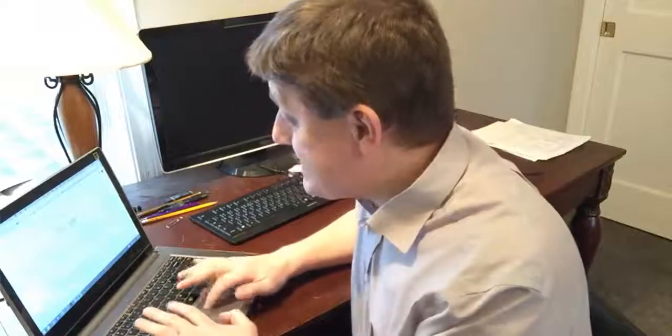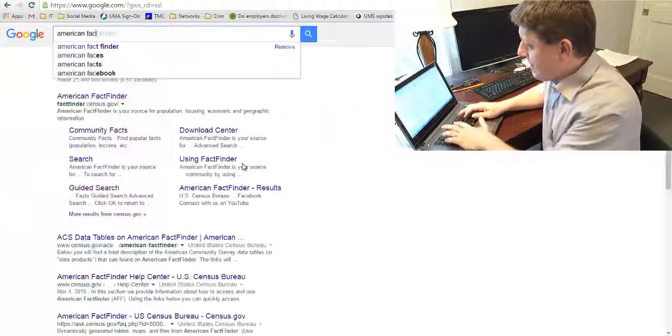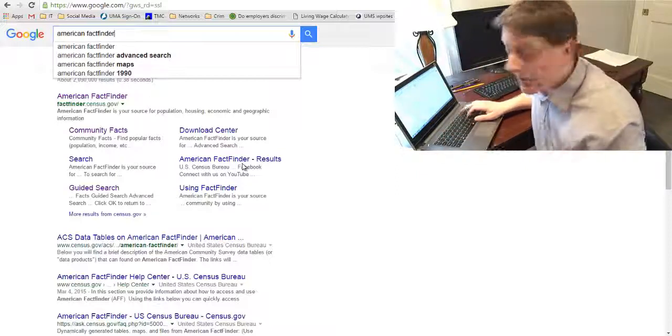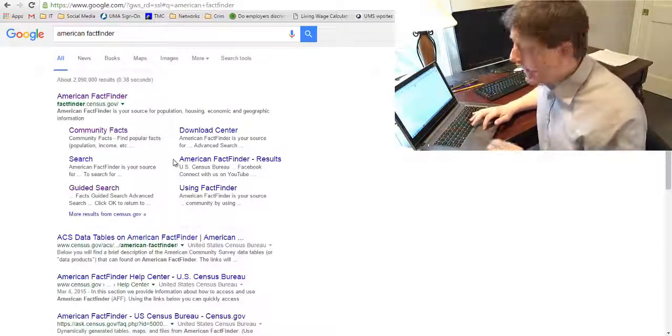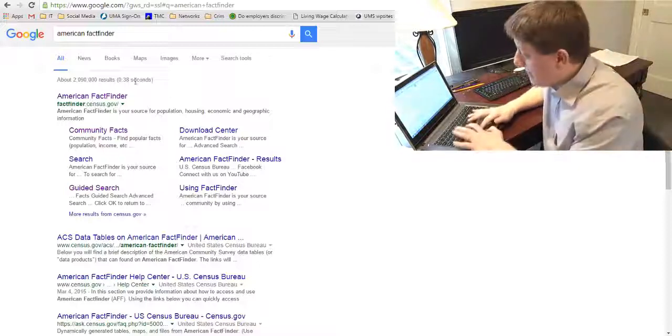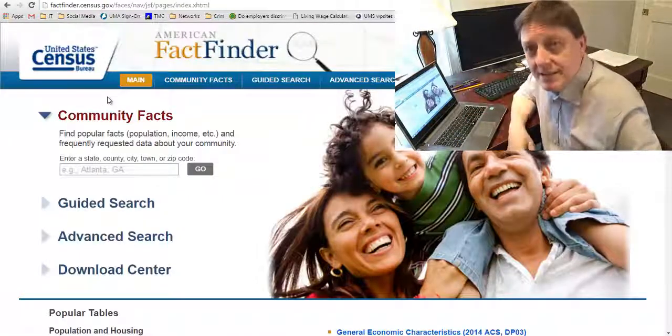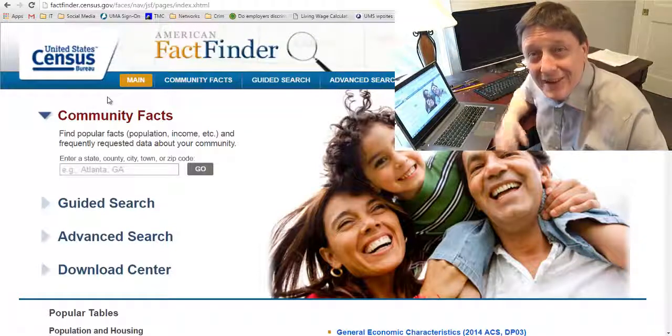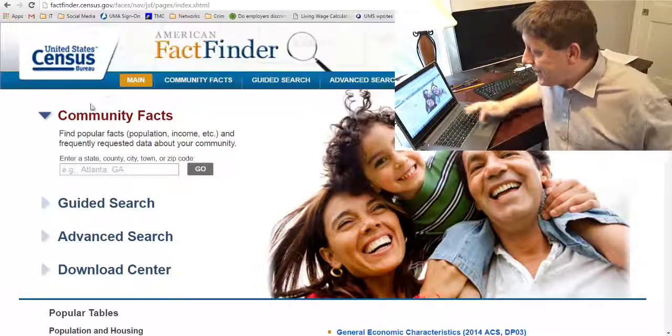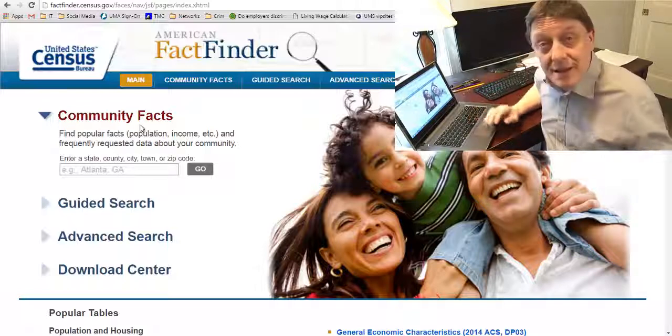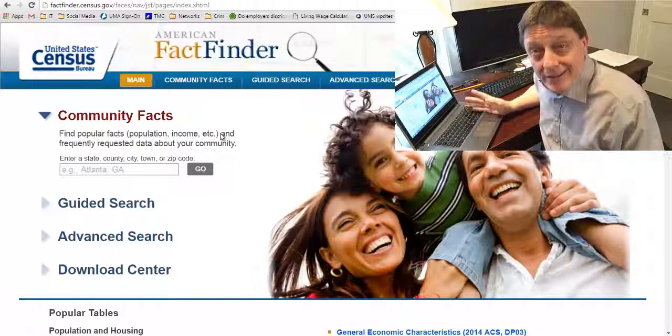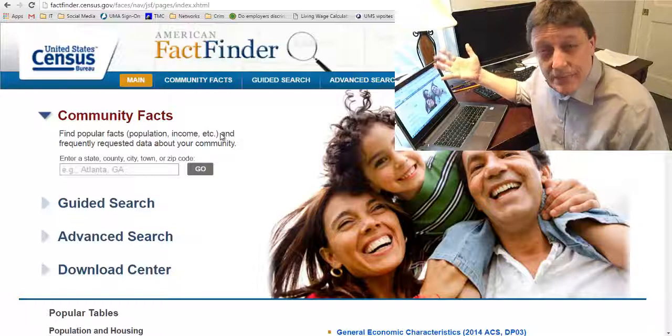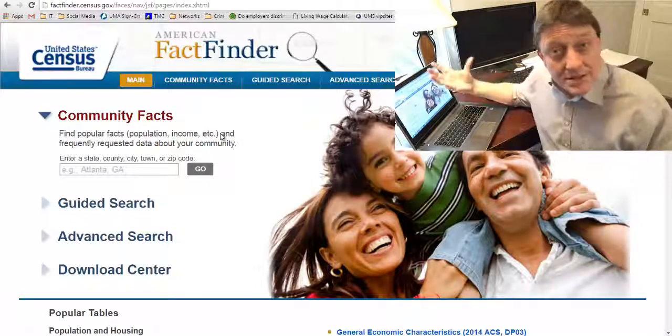To get started let's head to your favorite search engine and type in the words American FactFinder. You'll be taken to results and the first should be a website called factfinder.census.gov. Click on that and you'll be taken to a web page that shows smiling people and a link called Community Facts. It says find popular facts, population income, etc. and frequently requested data about your community. This is a website set up free and open access by the United States Census Bureau.